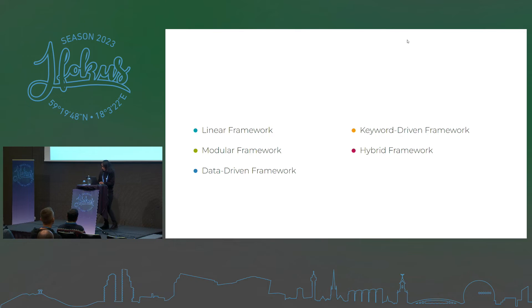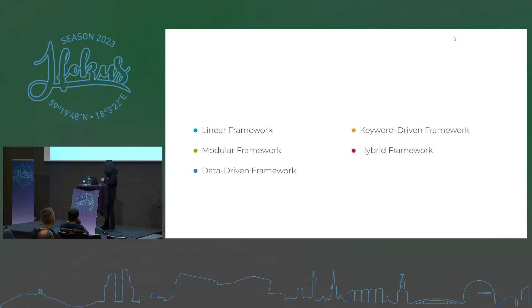The keyword-driven framework is a type of test automation framework that uses keywords to represent different actions that need to be performed during testing. This makes it easy to create and maintain test cases, as well as to update them when changes are made to the application. The hybrid framework is a combination of two or more types of test automation frameworks, which allows you to take advantage of the strengths of different frameworks and tailor it to meet the specific needs of a project.